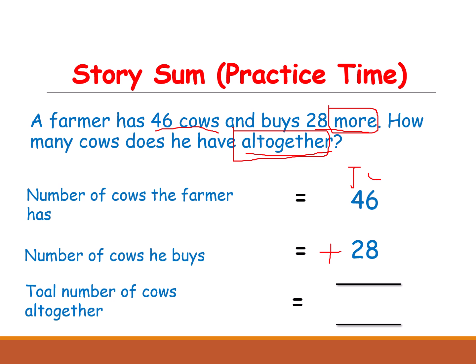In the tens and ones place we have 6 and 8. 8 is the biggest number. Keep 8 in your mind and open 6 fingers. After 8: 9, 10, 11, 12, 13, 14. How much did you get? 14. Write 1 on top for the carry.